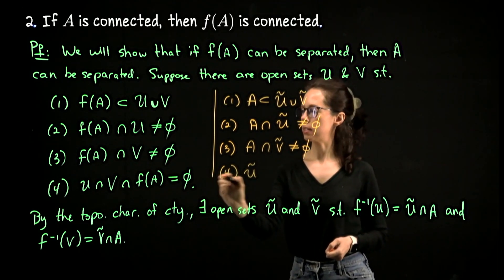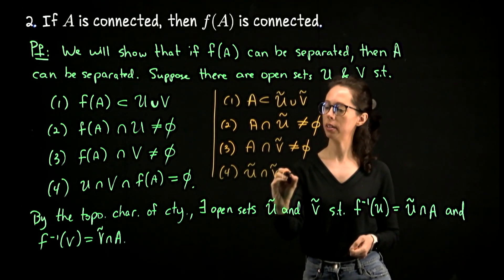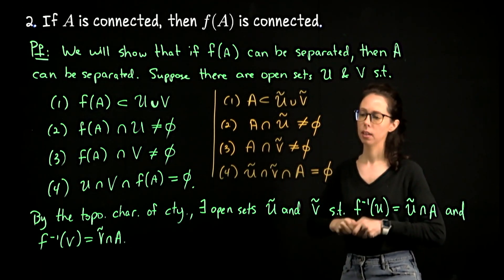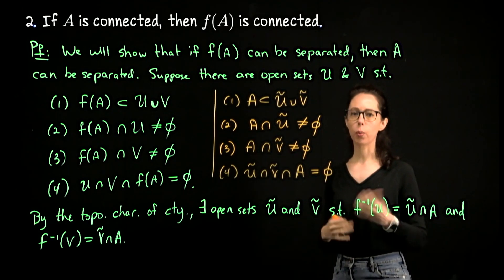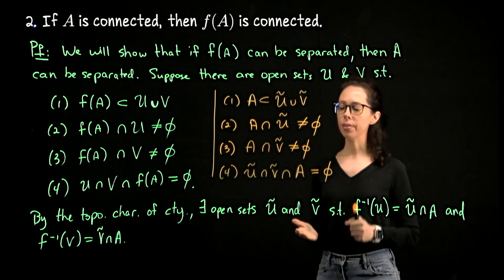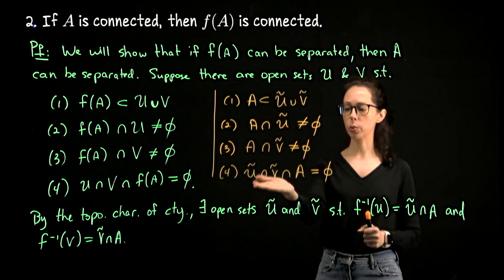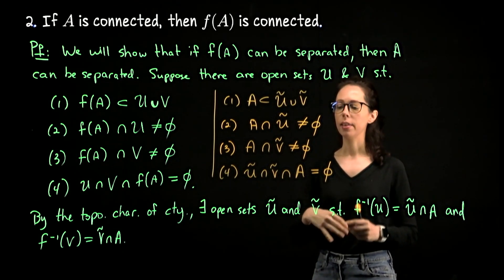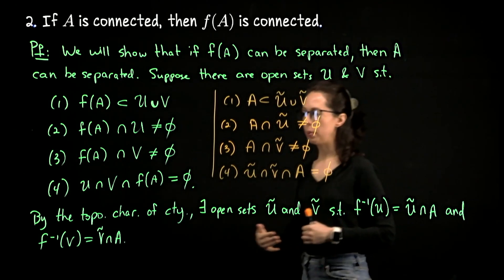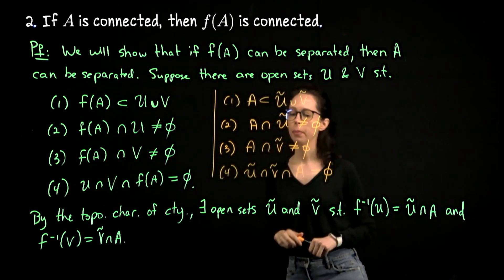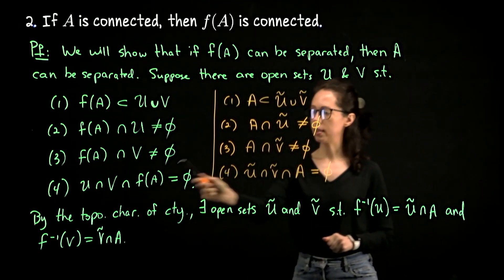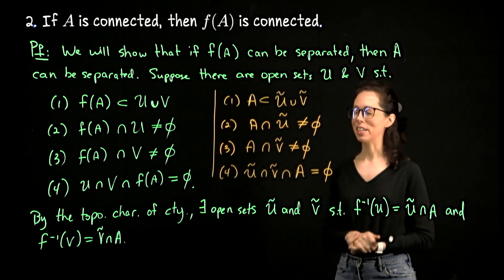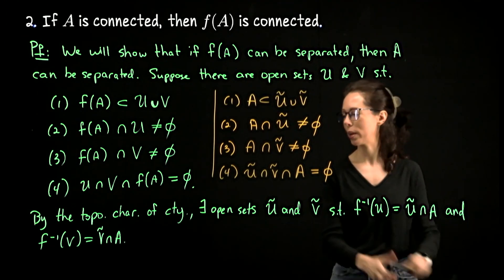Do these overlap in the domain? Or is it the case that U tilde intersect V tilde intersect A is empty? Once again, thinking about inputs and where they would map to. If there was an input in A which was covered by both of these, so it lived simultaneously in U tilde and V tilde, then its output f of x would be covered by both U and V while being an output. So if this was non-empty, this would be non-empty. So that's the argument. You might want to write down a little bit more detail than what I've written here. But at this point, I think we are basically done.